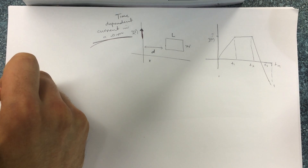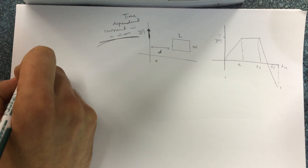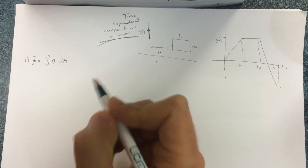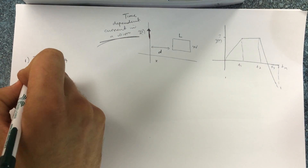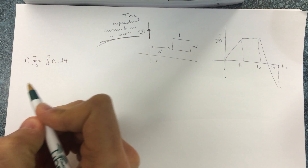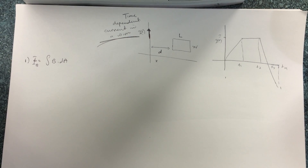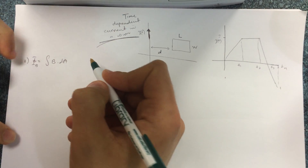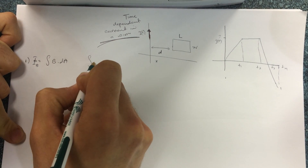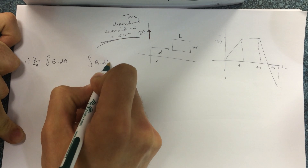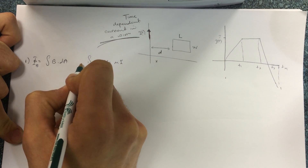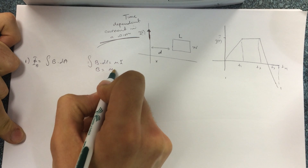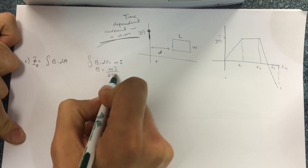The flux equation is: Φ = ∫ B · dA. That's always the formula for magnetic flux. So what is the magnetic field from the wire? We'll use B = μI / (2πx).